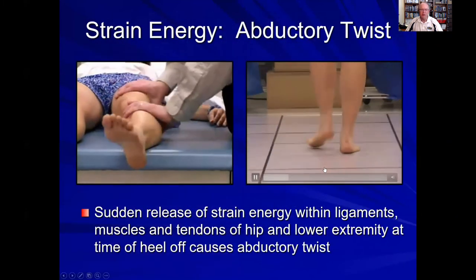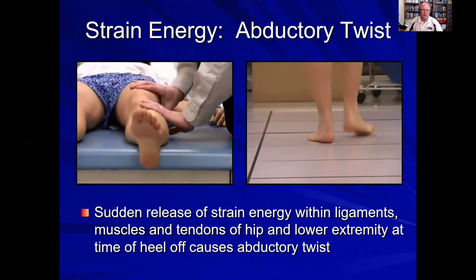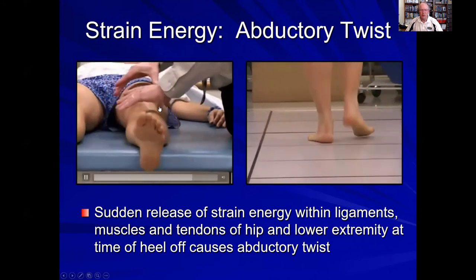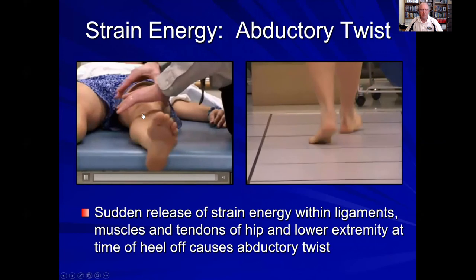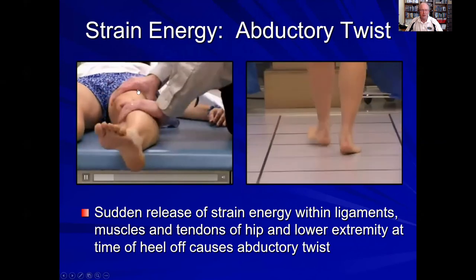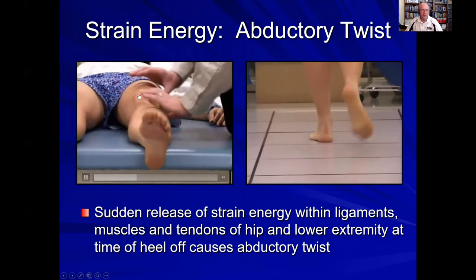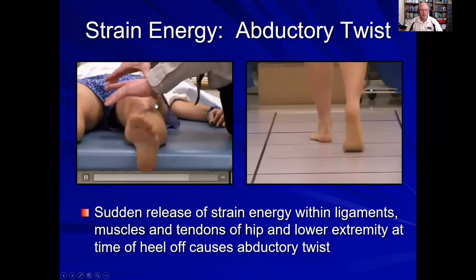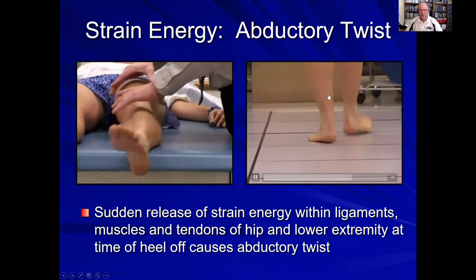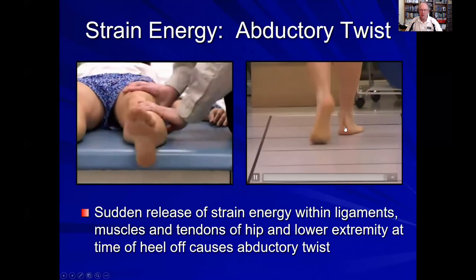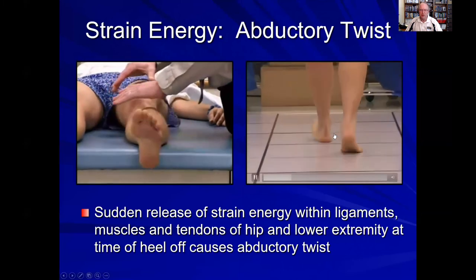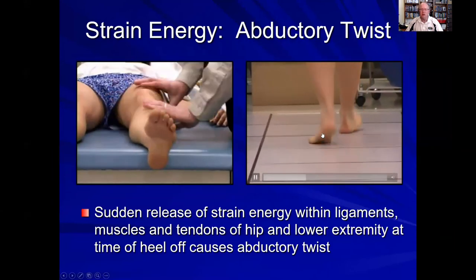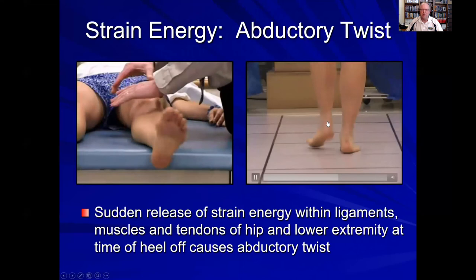In humans, we also store strain energy. In this video on abductory twist, we see the subject walking, and then I take their leg and internally rotate it while they're relaxed — and you can see how it snaps back. That's elastic strain energy within the hip and knee ligaments and muscles: while stretching, it stores strain energy, then snaps back, releasing kinetic energy. We see the same thing in abductory twist, where the heel snaps medially at the end of mid-stance as the heel lifts off — another type of elastic strain energy in the human body during locomotion.